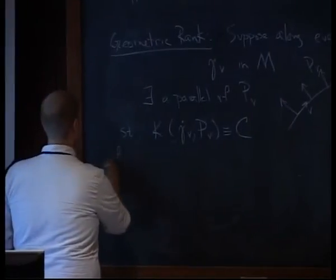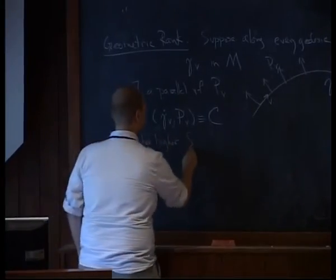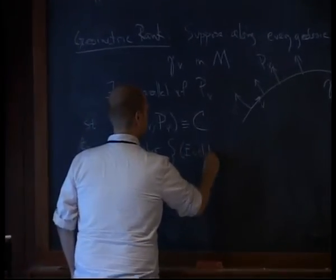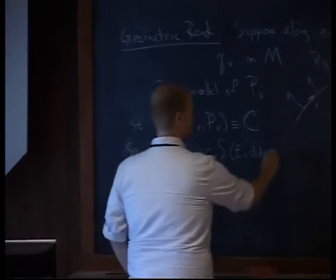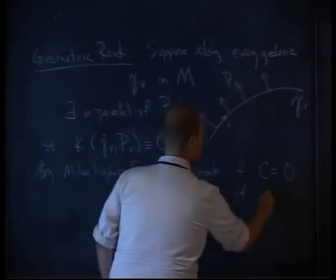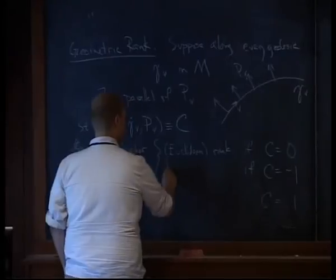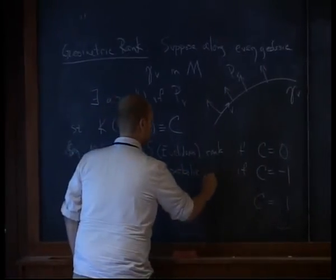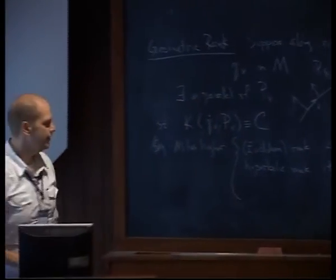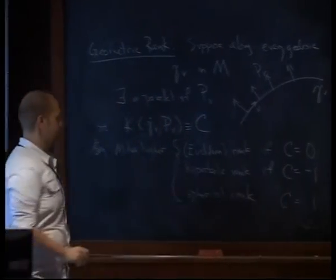So we say that M has higher rank. First I'll talk about Euclidean rank — this is the case where c equals zero, which is what you're used to hearing about for higher rank of a manifold. But we can also extend this to negative and positive curvature. If c is negative one, we say the manifold has higher hyperbolic rank, and this is the situation I'll be talking about today. If c is positive one, we say the manifold has higher spherical rank.